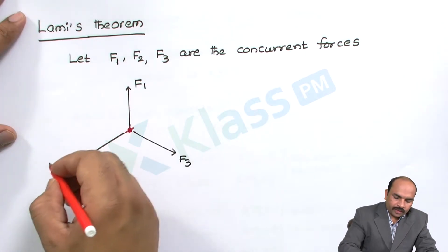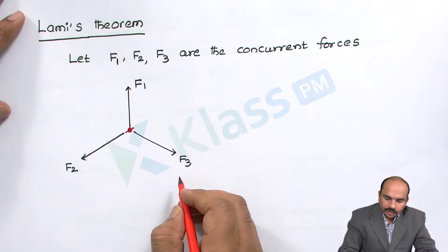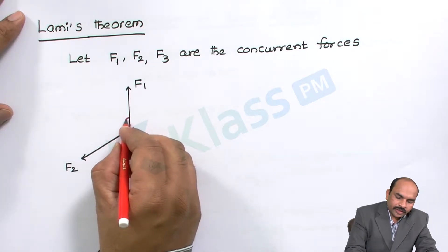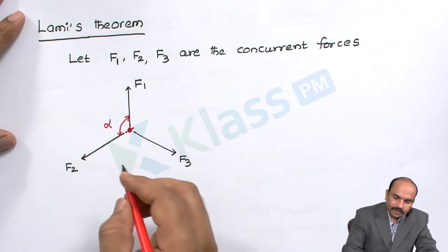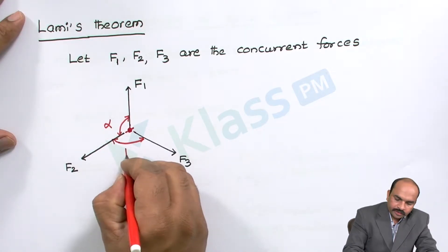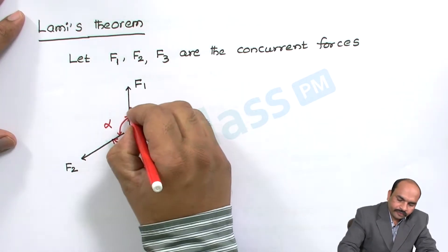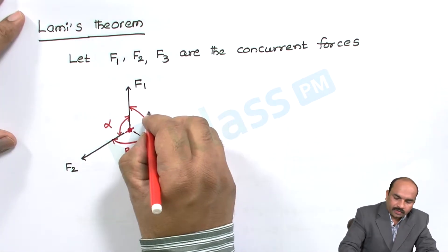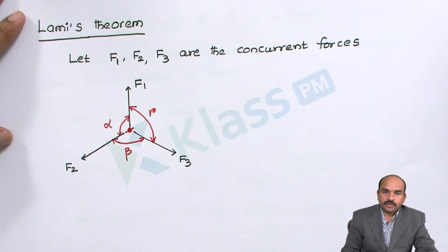Simply we can say: the forces F1, F2, F3, if all three forces are meeting at a common point, we can say those forces are concurrent forces. Let us take the angle between F1 and F2 as alpha, the angle between F2 and F3 as beta, and the angle between F1 and F3 as gamma. So alpha, beta, gamma are the angles between the forces as shown.